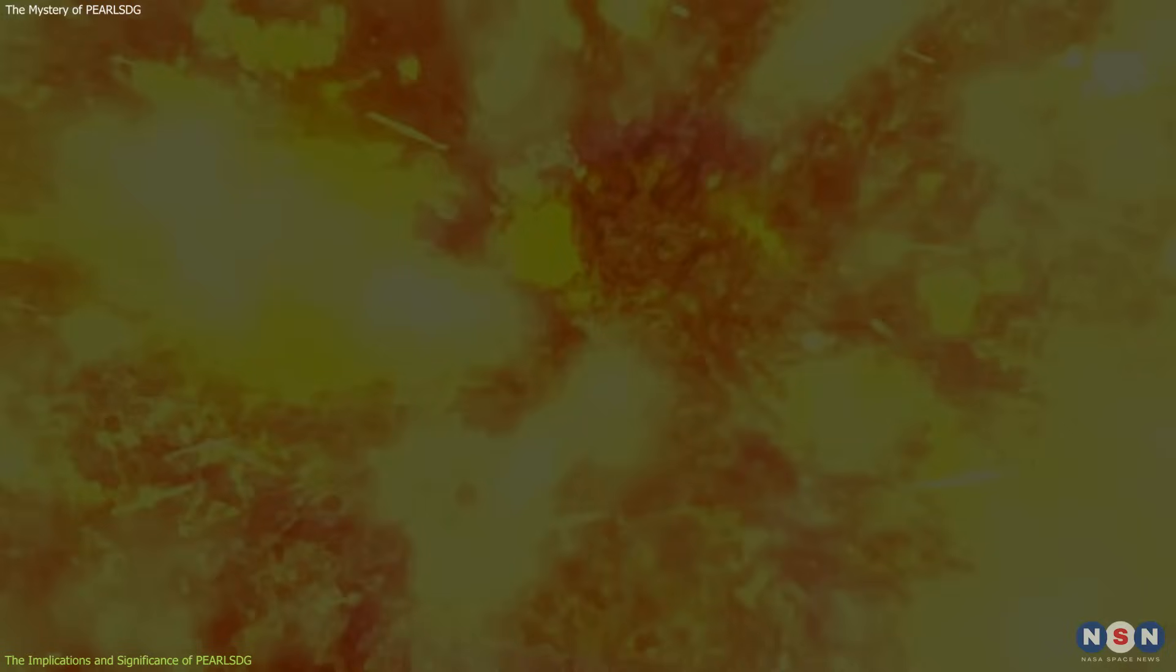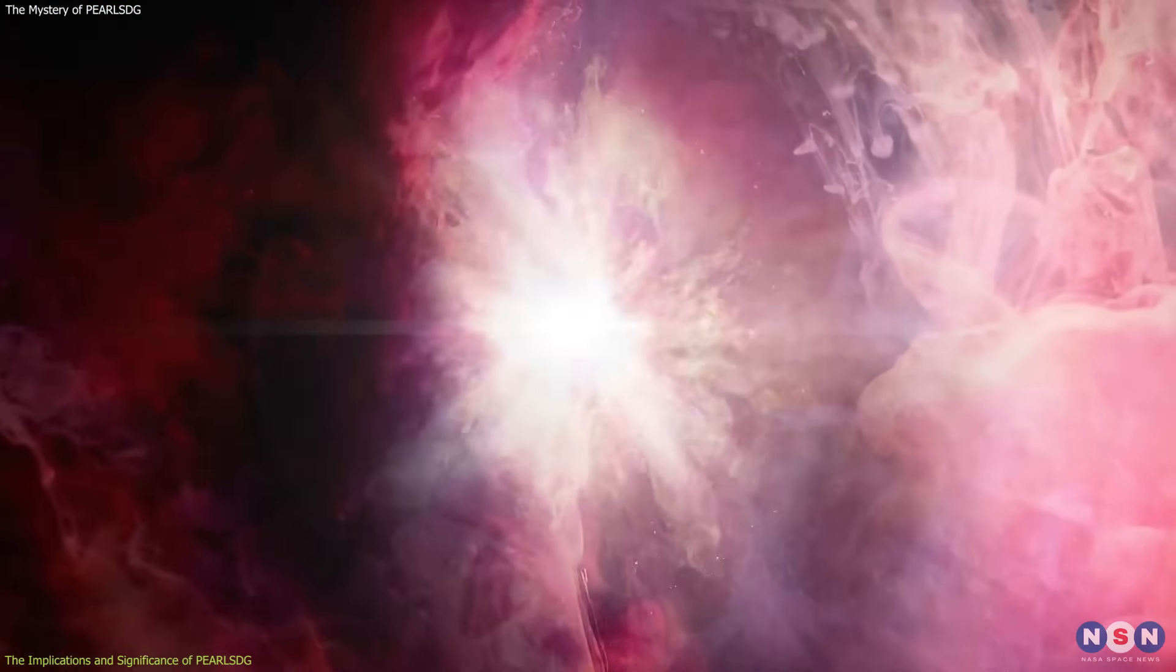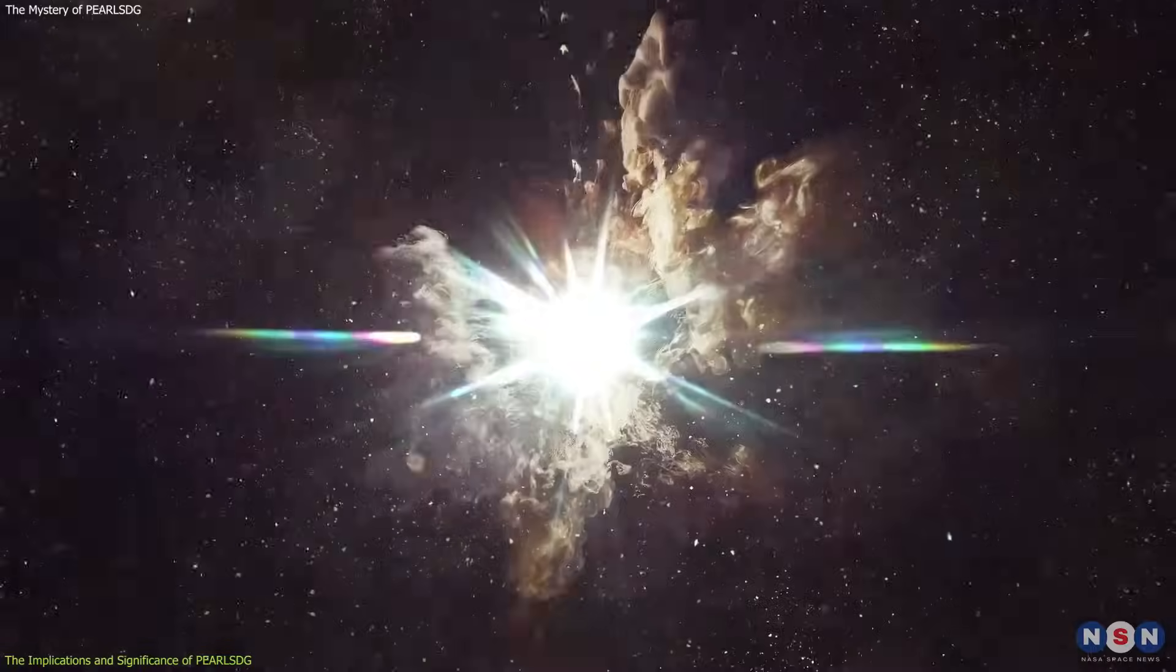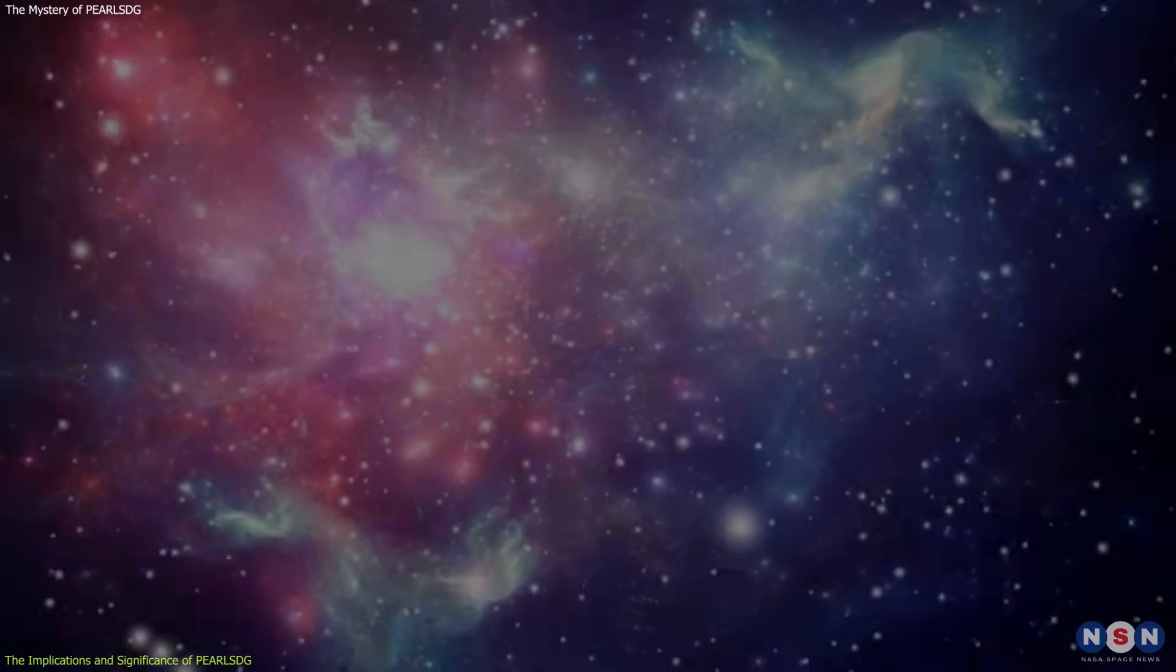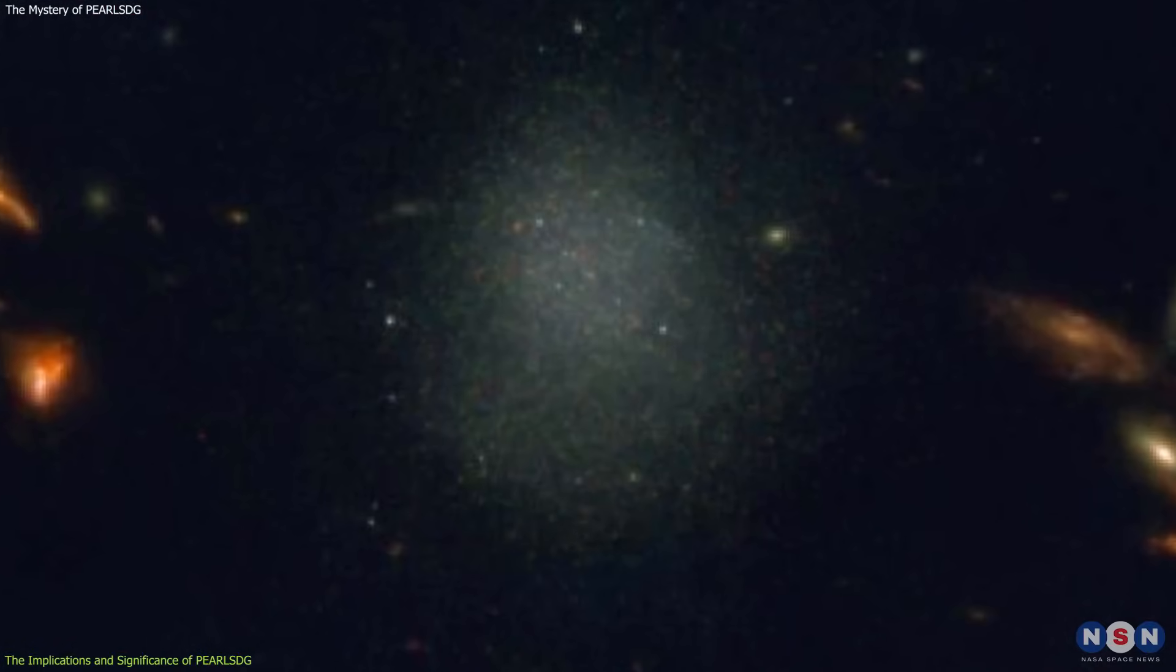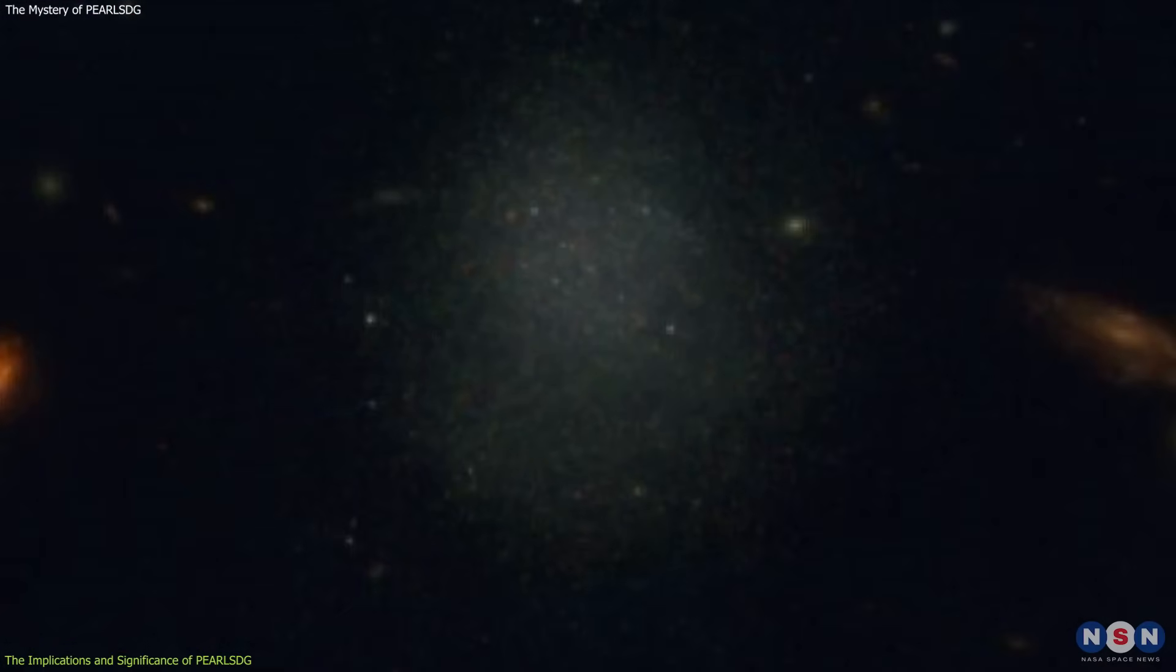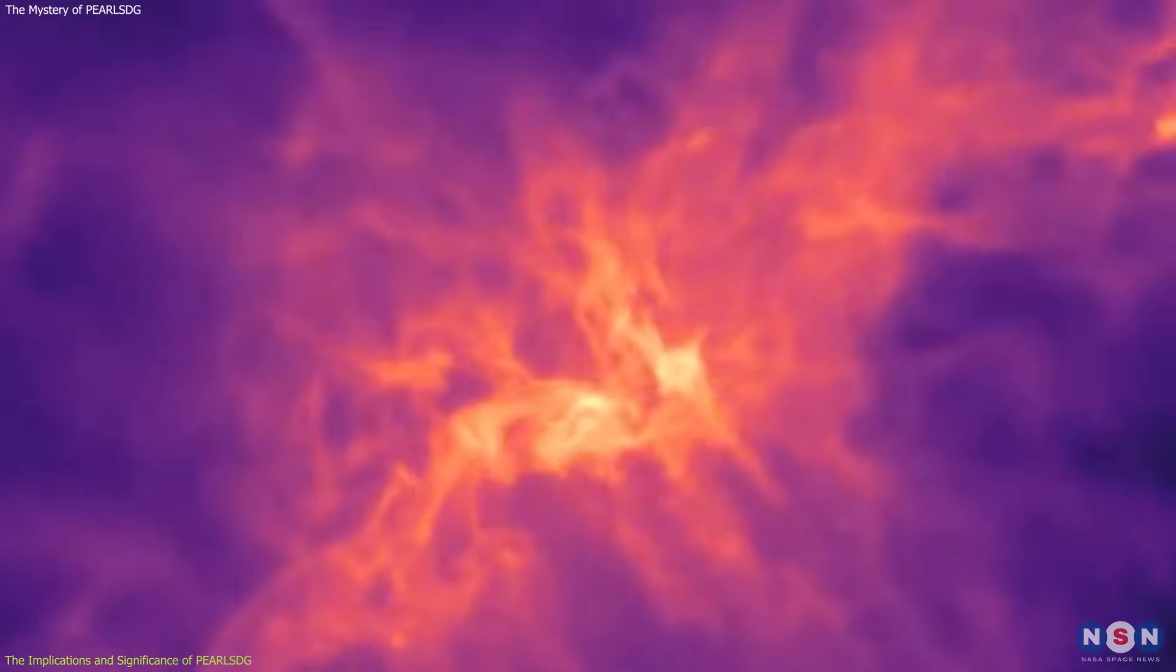These elements are produced by the nuclear fusion of stars, and they are spread into the galaxy and the intergalactic medium by supernova explosions and stellar winds. A low metallicity implies that PEARLS DG has not experienced much star formation or feedback, and that it has retained its pristine and primordial gas.